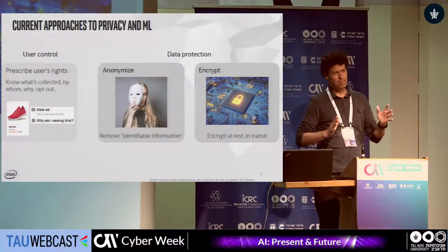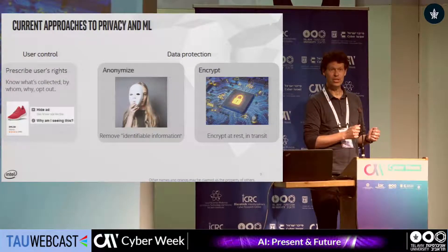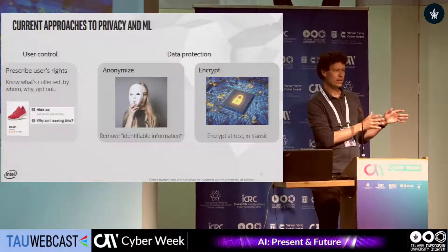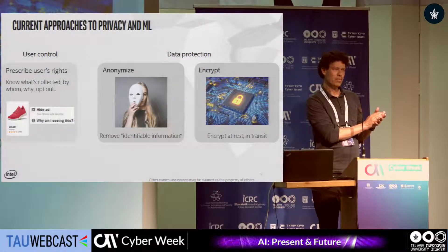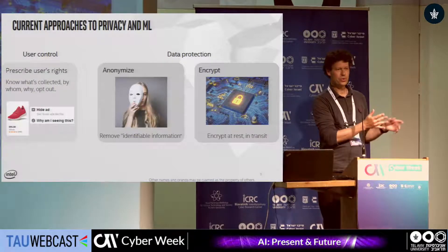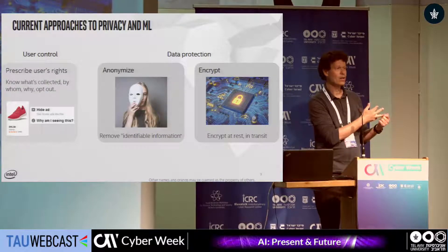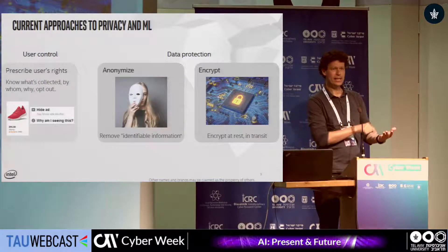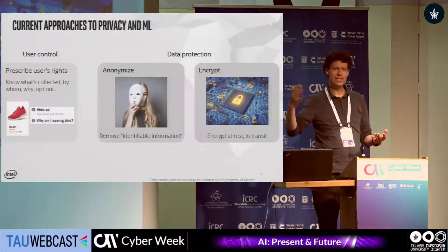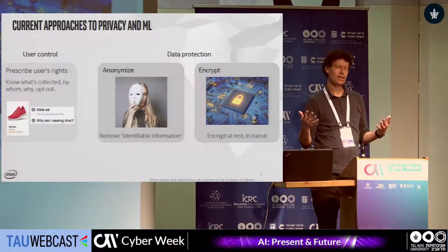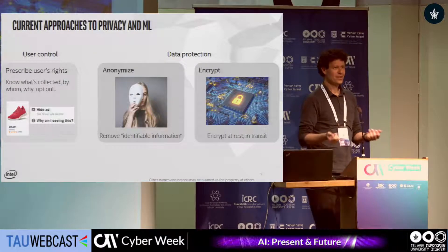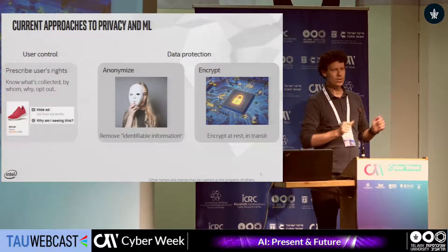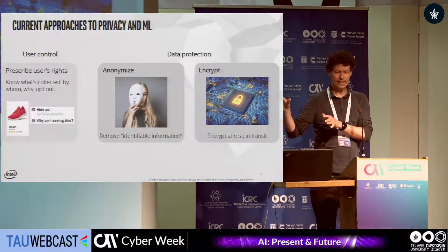Privacy is a big word, so let's unpack it. Current approaches to privacy in machine learning split into two major pillars. The first is user control — giving users rights around their data: who collects it, for how long, for what purpose, and can they opt out. For example, clicking an ad for red shoes and then seeing red shoe ads everywhere is a breakdown of user controls.